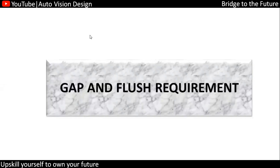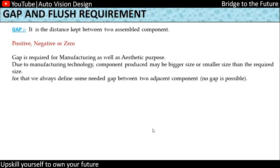Here you can check gap and flush — these are two important values in automotive plastic assembly. Whenever we are assembling two components, following a 3-to-1 principle, we need to have this gap and flush condition. Gap is the distance between two assembled components, and flush is the surface level difference between them.